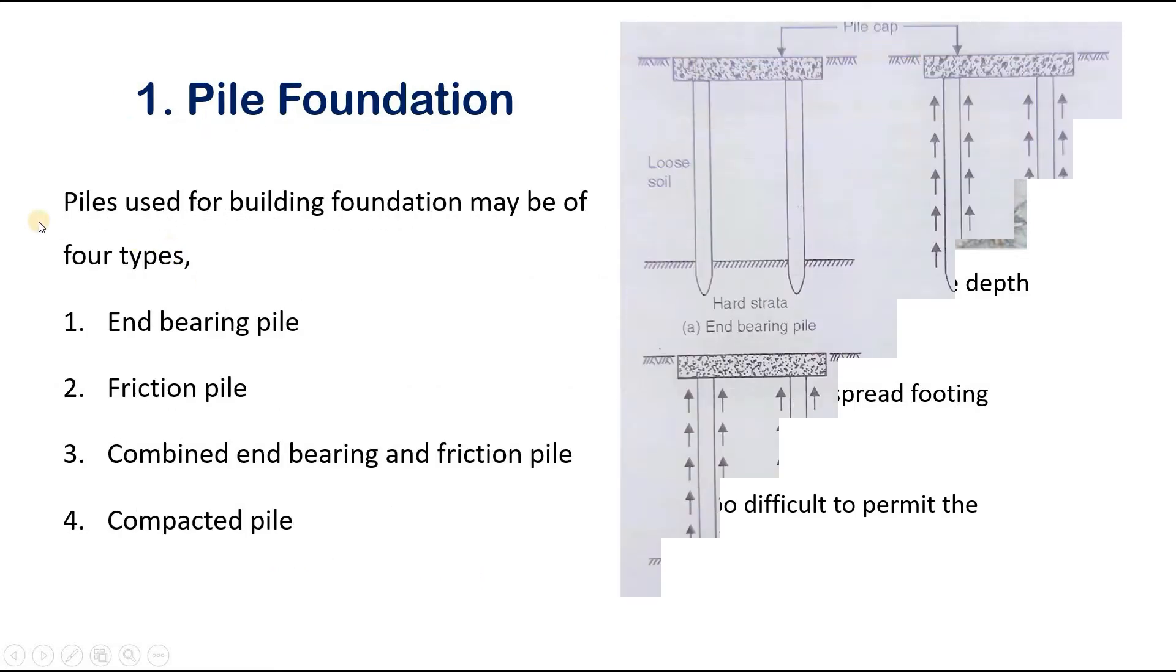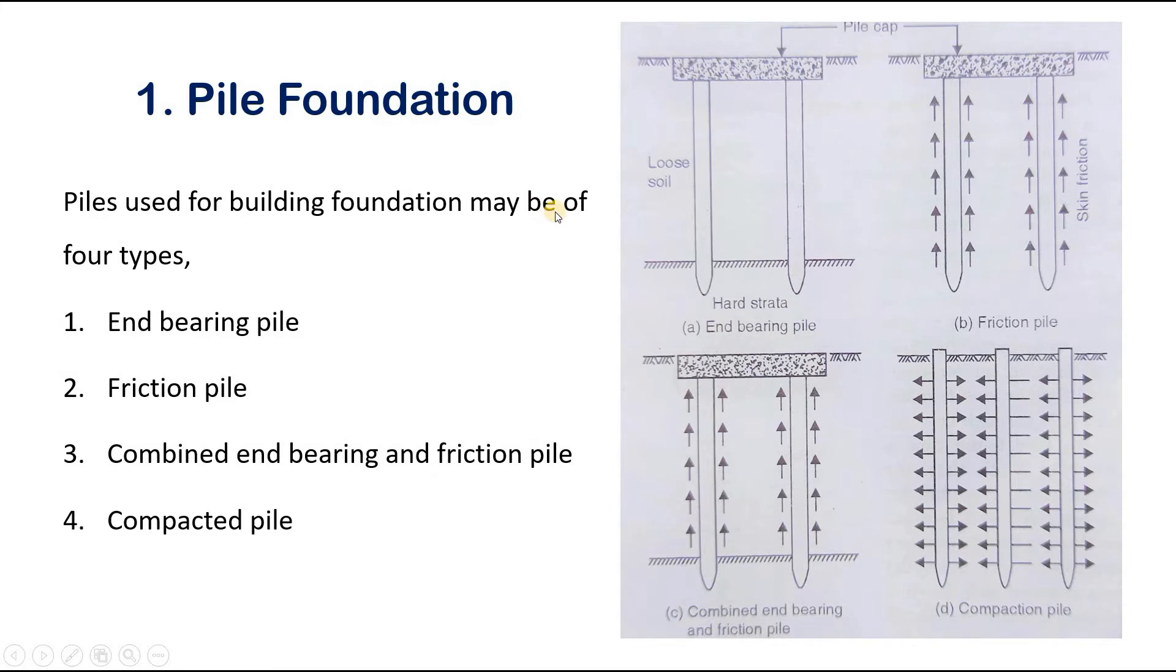These piles used for building foundation may be of four types: end bearing piles, friction pile, combined end bearing and friction pile, compacted pile. End bearing piles are used to transfer loads through water or soft soil to a suitable bearing strata. End bearing piles are used to carry heavy loads safely to hard strata and to minimize the settlements.